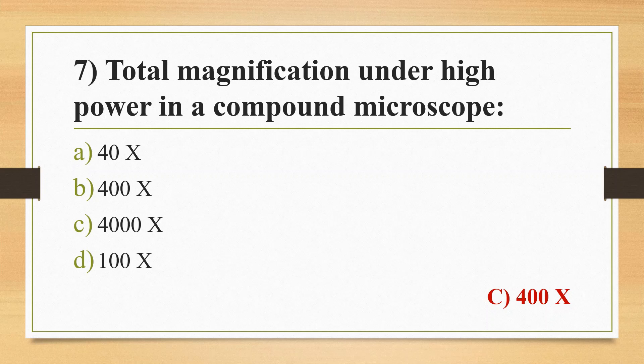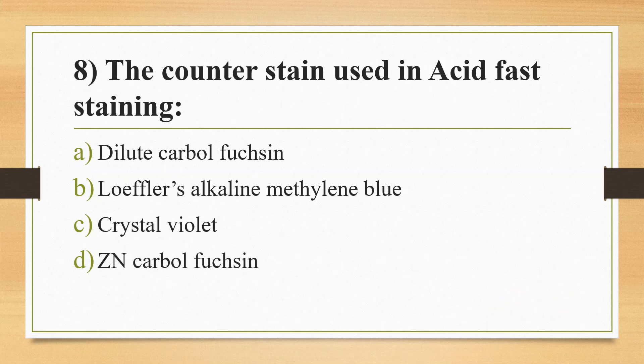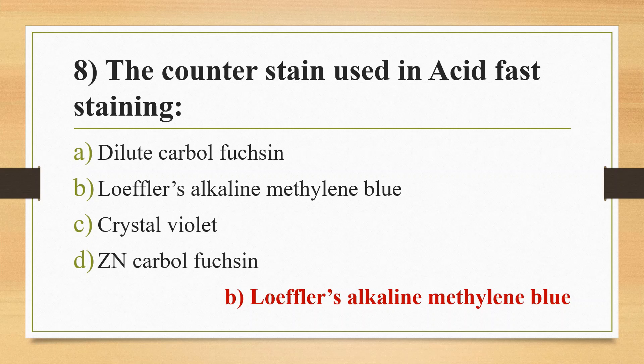Question 8: The counterstain used in acid-fast staining. Option A: Dilute Carbol Fuchsin. Option B: Loeffler's Alkaline Methylene Blue. Option C: Crystal Violet. Option D: Ziehl-Neelsen Carbol Fuchsin. Answer is Option B, Loeffler's Alkaline Methylene Blue. In acid-fast staining (Ziehl-Neelsen staining), the primary stain is Carbol Fuchsin and the counterstain is Loeffler's Alkaline Methylene Blue, used for detecting acid-fast bacilli like Mycobacterium tuberculosis and Mycobacterium leprae.